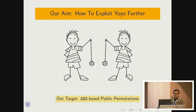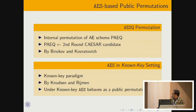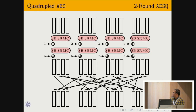Our target permutations are the ASK permutation and AES in the non-key setting. In the ASK permutation, there are four AES states, each passing through two rounds of AES, followed by a permutation. In the original ASK, these steps are repeated 10 times, giving 20 rounds in total.